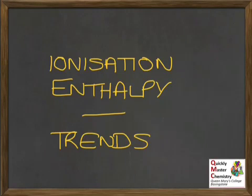In this second part of our study of ionisation enthalpy, we're going to look at trends in the size of the ionisation enthalpy for various situations. By the end of the presentation, you ought to be able to describe and explain the trend in the size of the first ionisation enthalpy for elements going down a group, also for elements going across a period, and you ought to be able to describe how successive ionisation enthalpies compare with each other for a given element. We need to use some of these trends to explain properties we see varying within a group, such as reactivity.